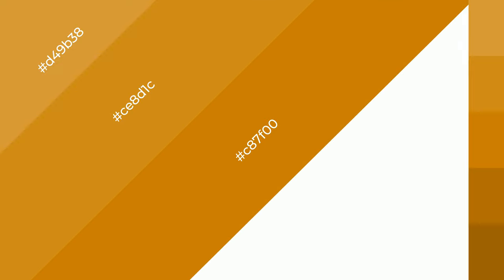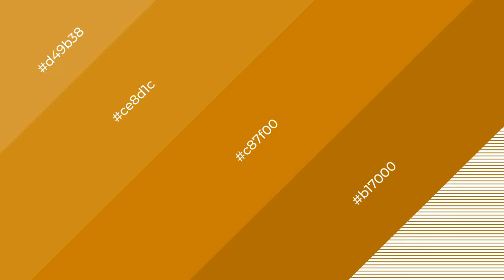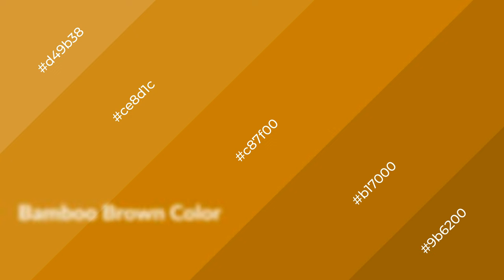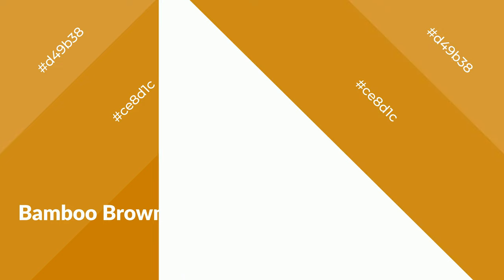To generate shades of a color, we add black to the color. It is used in patterns, 3D effects, and layers. Shades create depth and drama. Bamboo brown is a warm color and it emits cozier and active emotion.